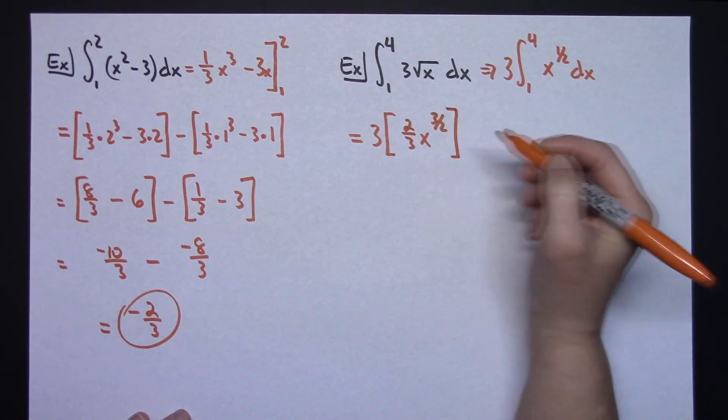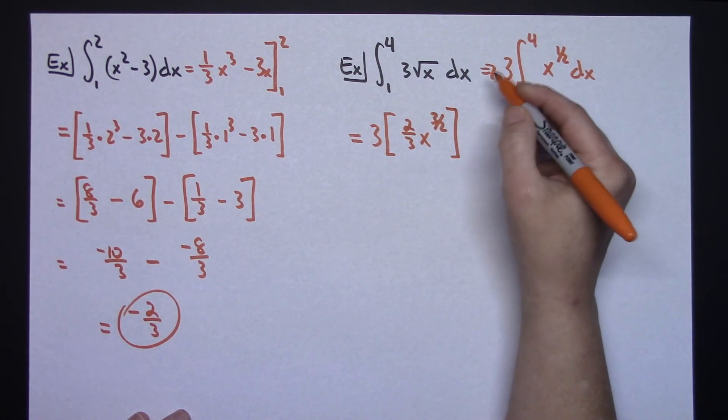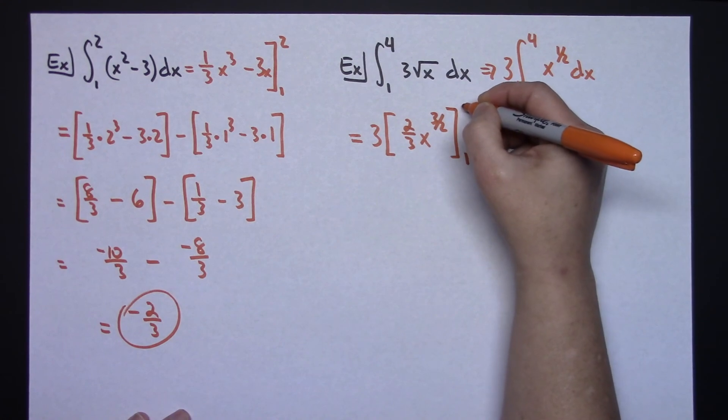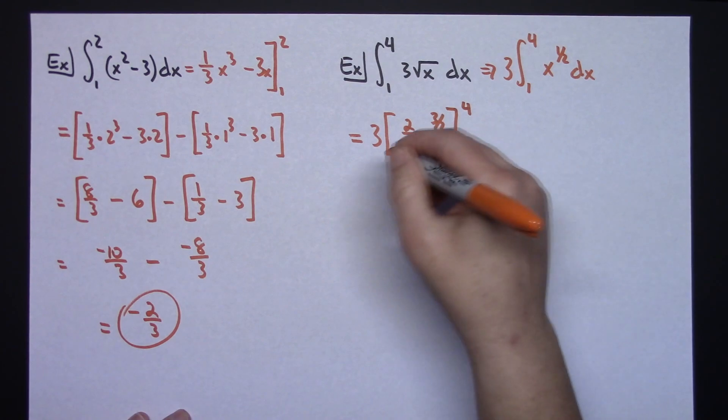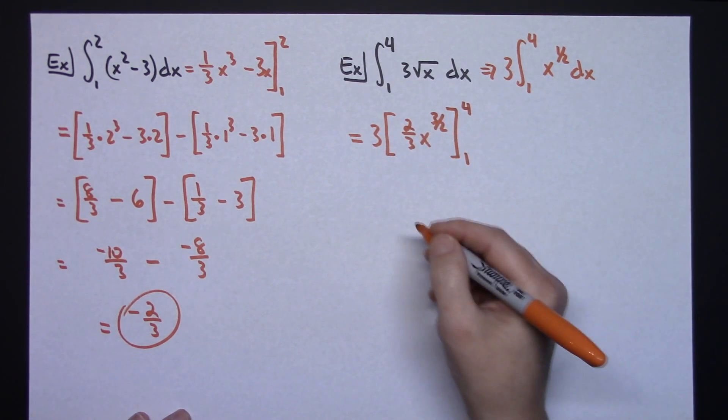Okay, so again, pretty simple integration. After you rewrite the problem, now I need to put on those limits of integration from 1 to 4. I'm going to be plugging in 4 and then subtracting, plugging in 1. So, that's the F(b) minus F(a).